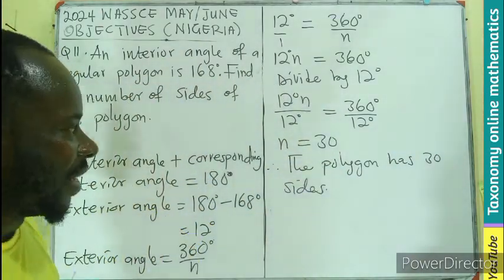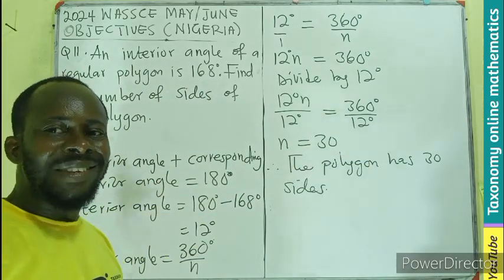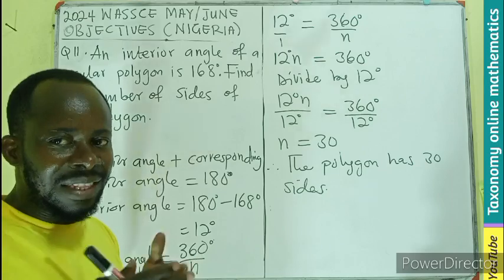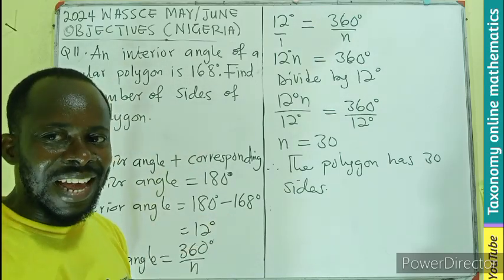So we can say that the polygon with interior angle of 168 degrees has 30 sides. It's regular with 30 sides. Thanks for watching, like, share, and comment.